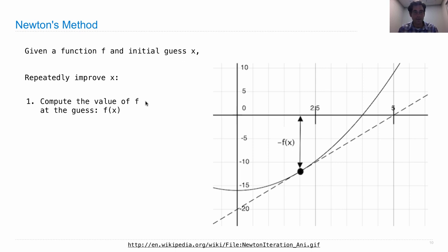We compute the value of f at the guess x, so we have to figure out where we are. We also compute the derivative of f at the guess x. That's called f prime of x. Now the derivative tells us the slope of this line, or how fast the function is changing.